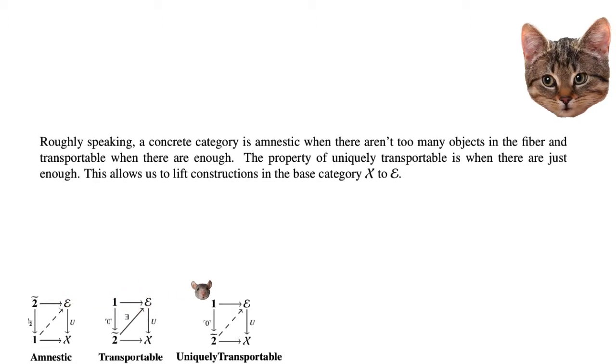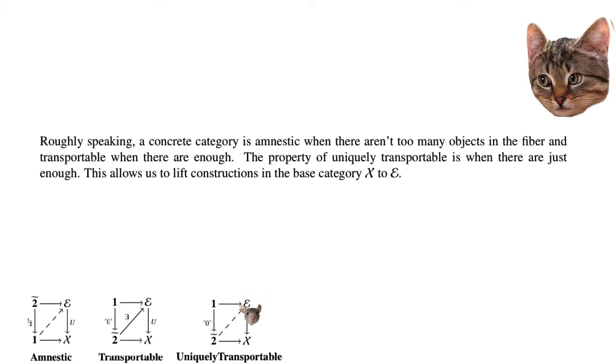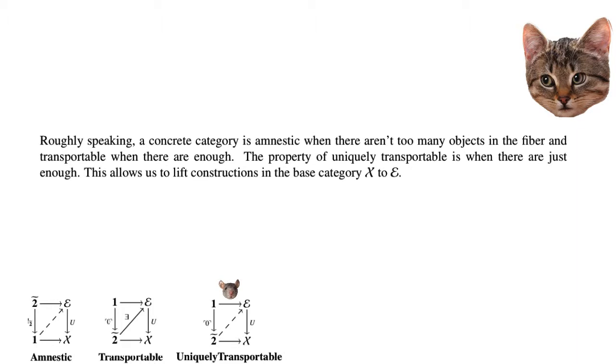Roughly speaking, a concrete category is amnestic when there aren't too many objects in the fiber, and it is transportable when there are enough. The property of being uniquely transportable is when there are just enough. This will allow us to lift certain constructions in the base category.